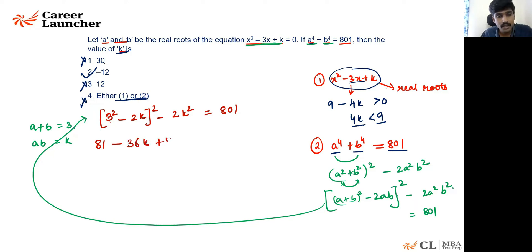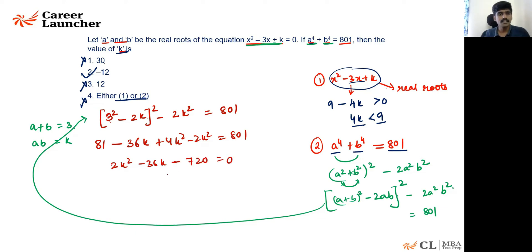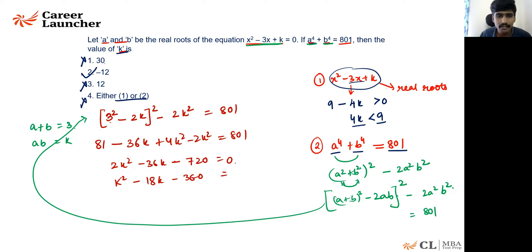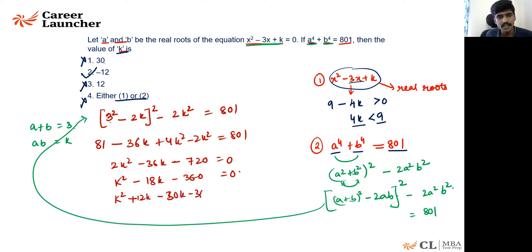This simplifies to 2k² − 36k = 720, then k² − 18k − 360 = 0. We need two numbers with product 360 and difference 18: those are 30 and 12. Factoring: (k + 12)(k − 30) = 0, so k = 30 or k = −12.